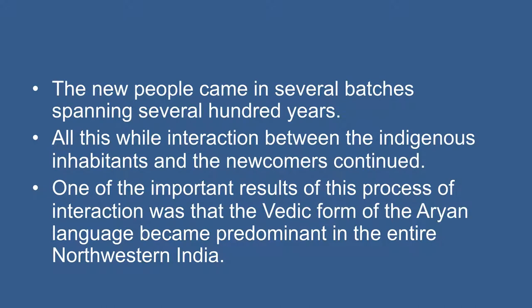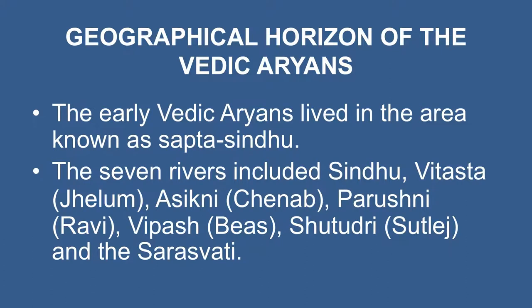The new people came in several batches spanning several hundred years. All this while, interaction between the indigenous inhabitants and the newcomers continued. One of the important results of this process of interaction was that the Vedic form of the Aryan language became predominant in the entire North-West India. The early Vedic Aryans lived in the area known as Sapt Sindhu, meaning area of seven rivers, largely covering the North-Western part of South Asia up to River Yamuna. The seven rivers included Sindhu, Vitasta, Ashkini, Parushni, Vipasa, Satrudi, and Saraswati.